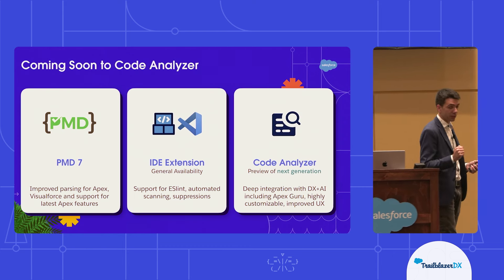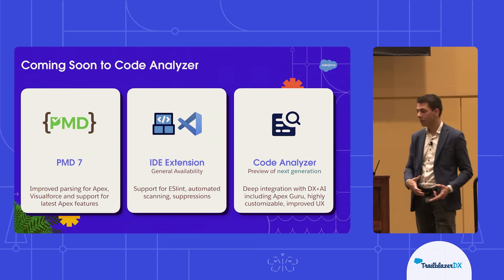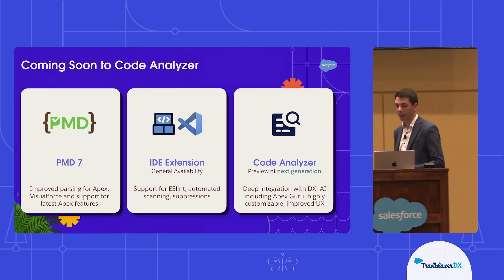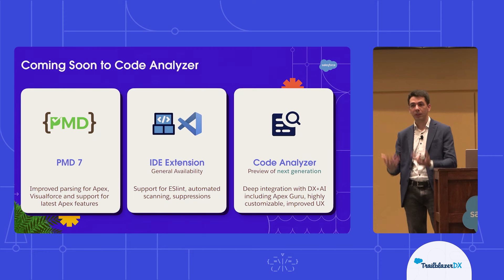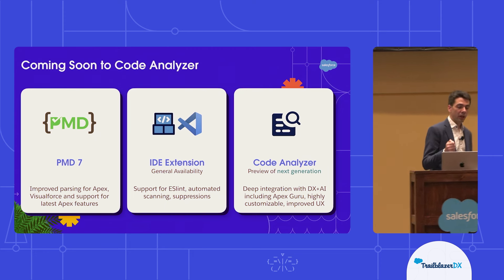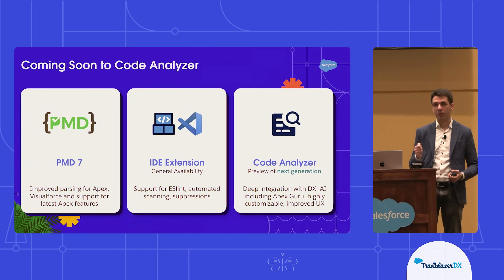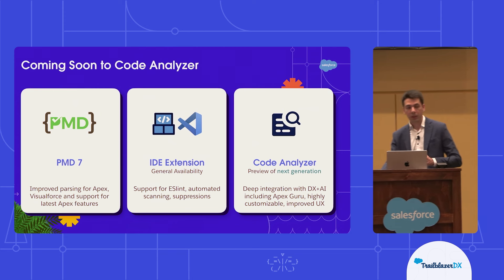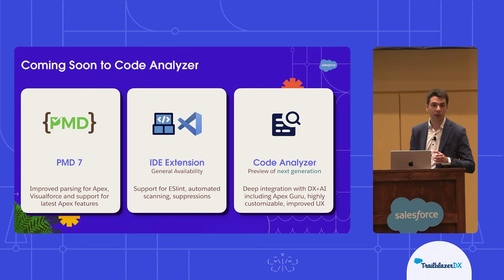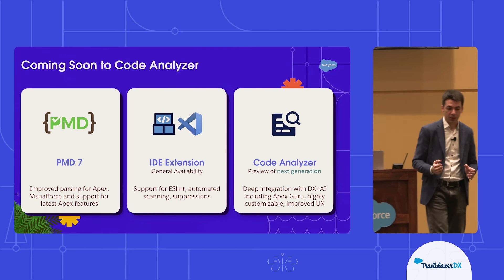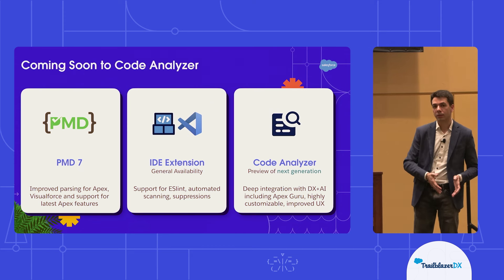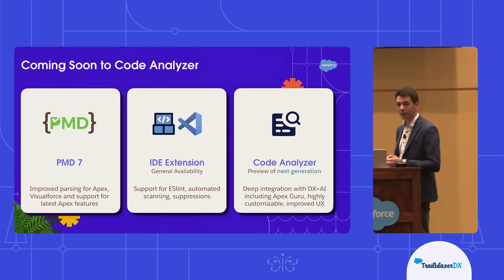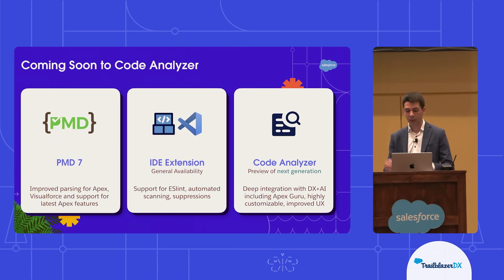I'm also very happy to announce that we are working on the next generation of Code Analyzer, which will deepen our integration with Einstein for Developers with the likes of quick fixes. So imagine there's a problem in your code — we can use Einstein for Developers to try to come up with a better version of your code that does not contain those particular problems. We are also going to deepen our integration with Scale Center and Apex Guru. And finally, we are going to make Code Analyzer much more customizable, meaning that you will get to the point of customizing it with your own engines, customizing Graph Engine with your own rules, customizing severity levels, and being able to more granularly select which rules you want to follow as part of your particular process with Code Analyzer.